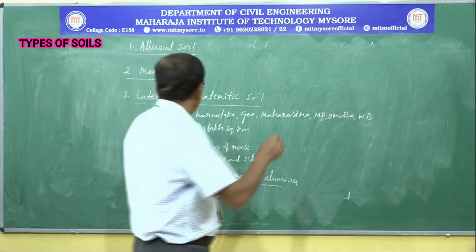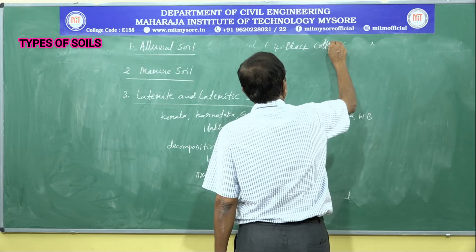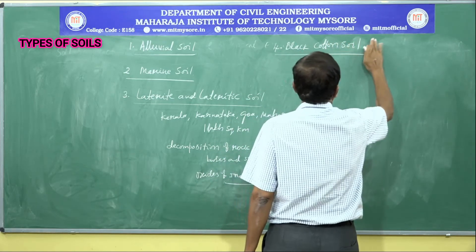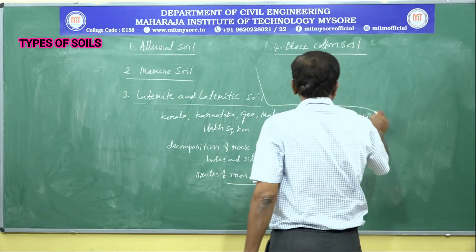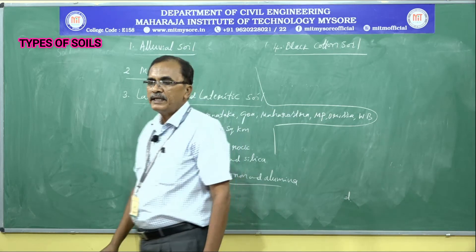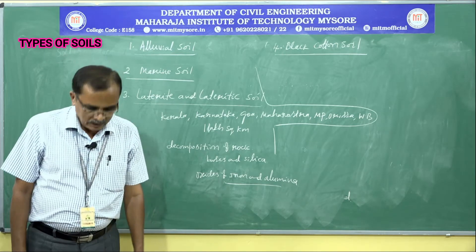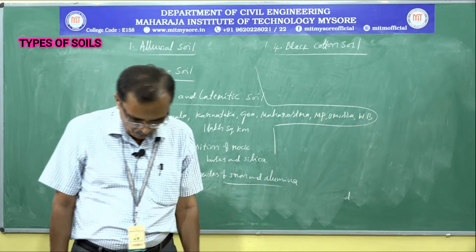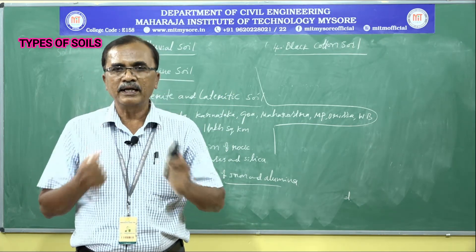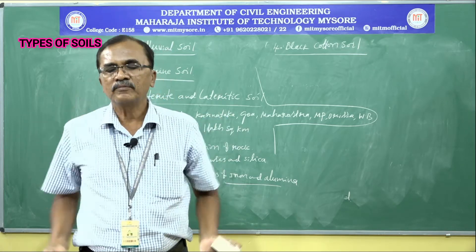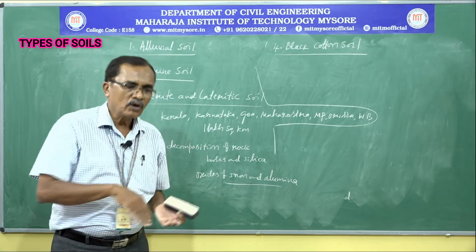Next is black cotton soil. It is the Indian name given to expansive soil. When water comes in contact with black cotton soil, it absorbs water like blotting paper and there is an increase in volume — hence it is called expansive.